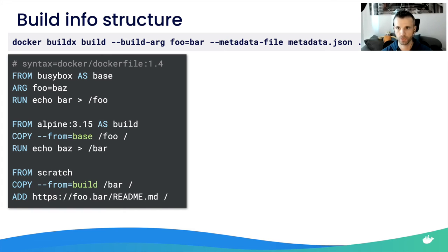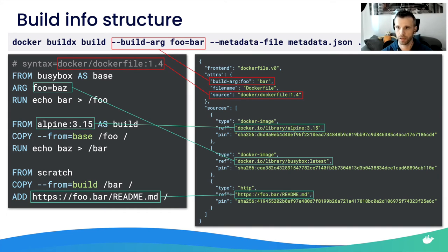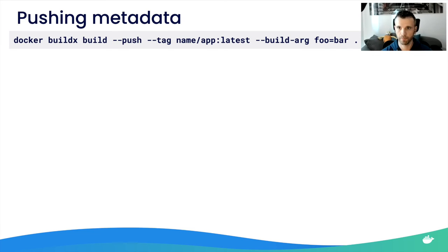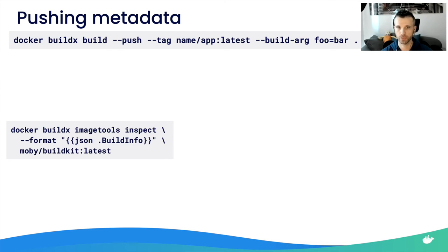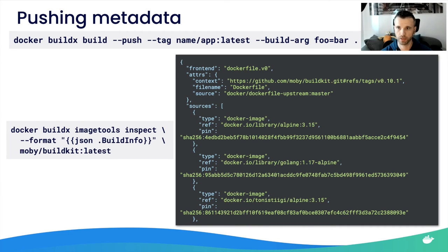Building a Dockerfile with this feature produces build information metadata showing build attributes passed at build time and build sources compliant with your Dockerfile — each pinned with its respective digest. You can also push build info metadata of your image without any extra steps: just push your image to your registry and it will be embedded in the image configuration. You can then use the `docker buildx imagetools` command to check the build information for a specific image.